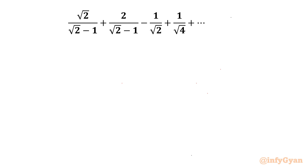Welcome to Infigyan, my dear friends. Today in this video we have one challenging question from sequence and series where we are going to evaluate the sum of a convergent series with infinite terms. Let me call this S. The first term of this series is √2/(√2−1), plus 2/(√2−1), minus 1/√2, up to infinity.